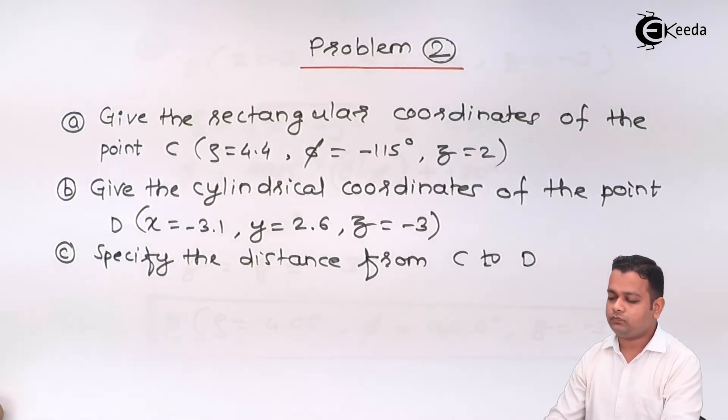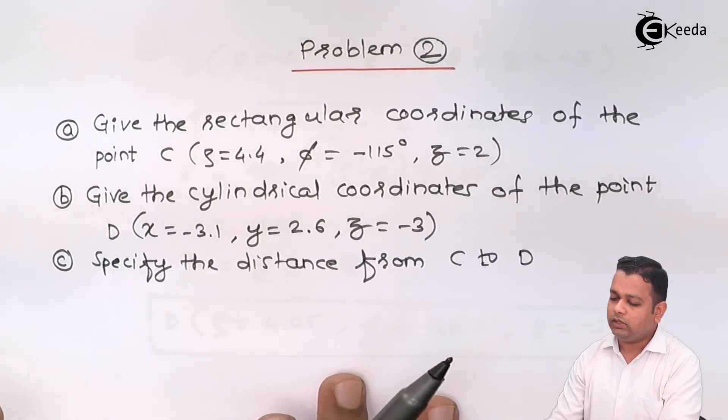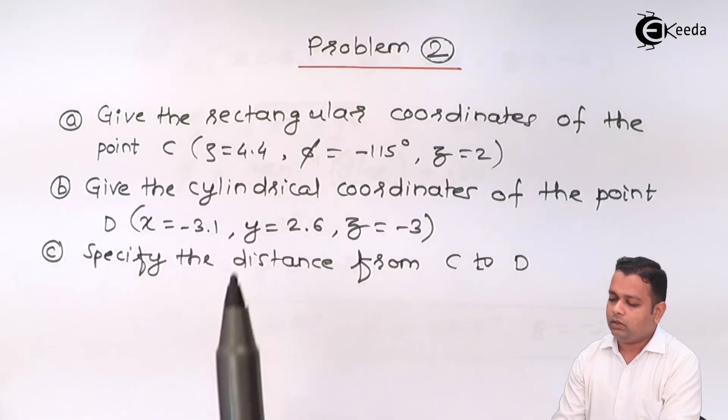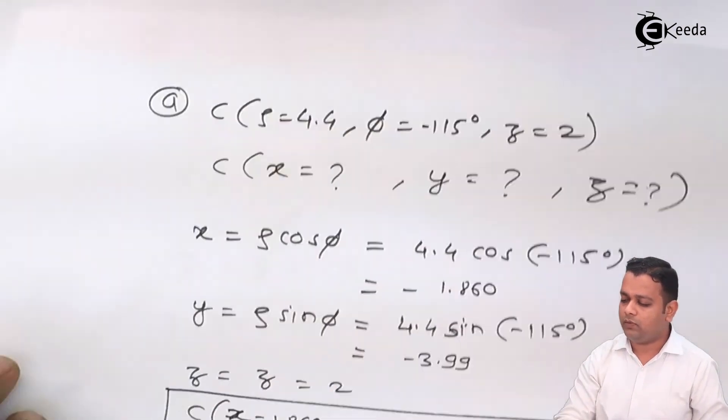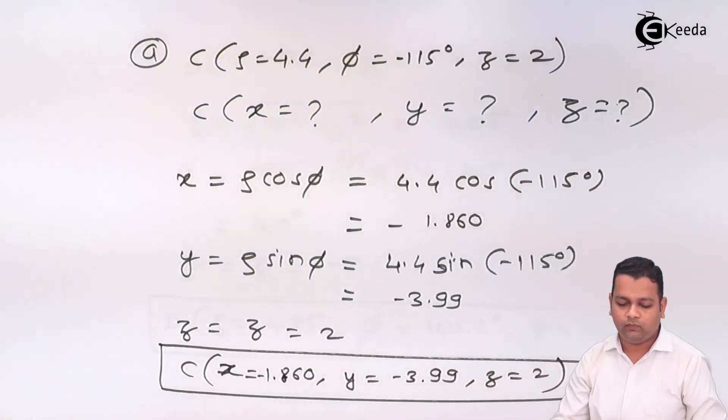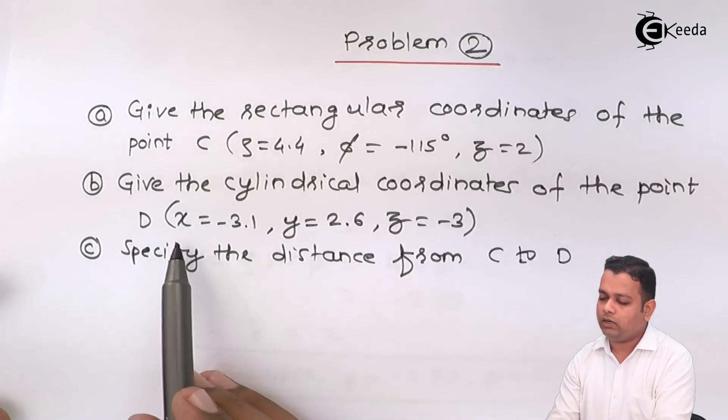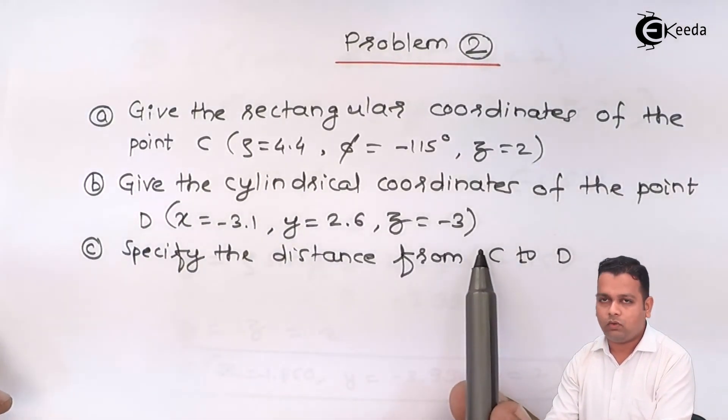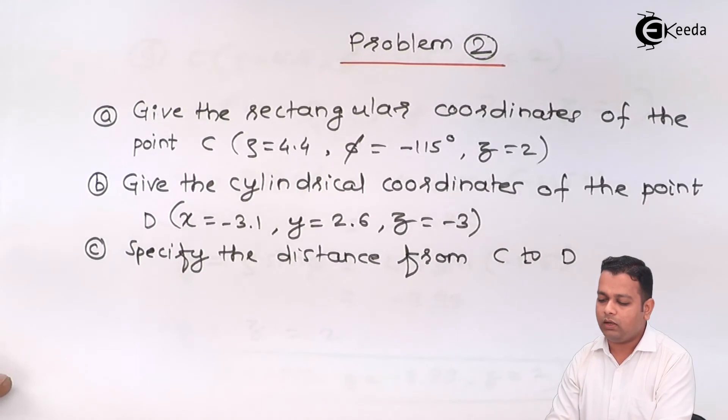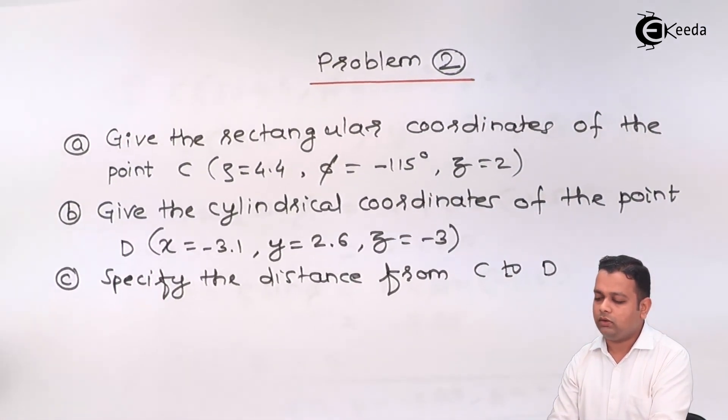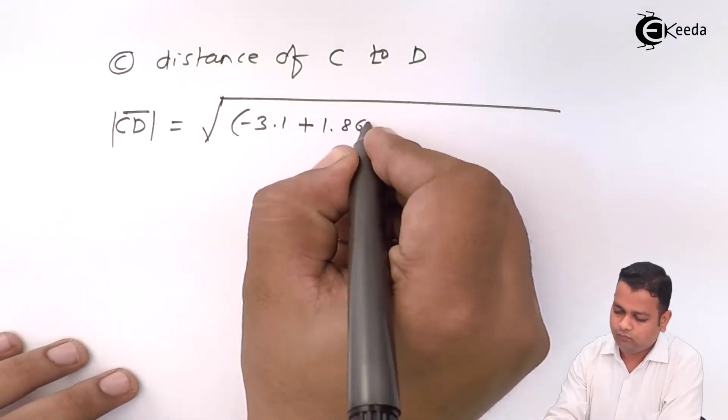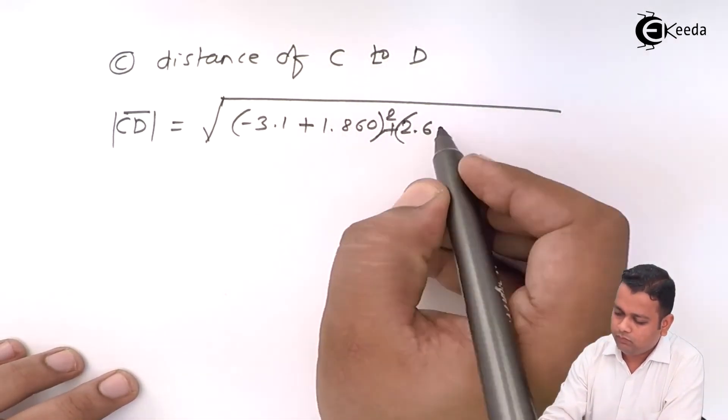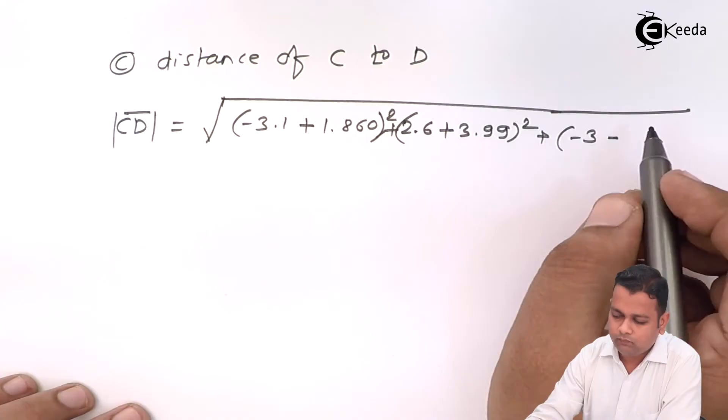So, in this case, the C we have calculated in the rectangular coordinate system having these values x, y, z. The D is already given in rectangular coordinates values. So, applying the distance formula, we can have the calculation of distance from C to D.